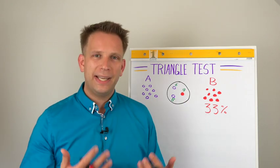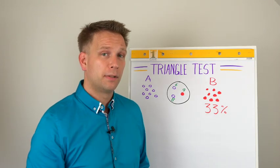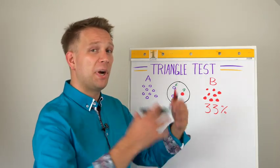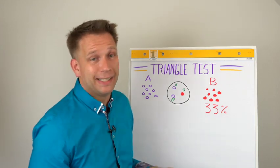Now, the triangle test checks how far are we above this 33%. So if we are much higher than this 33%, then apparently there is a difference.